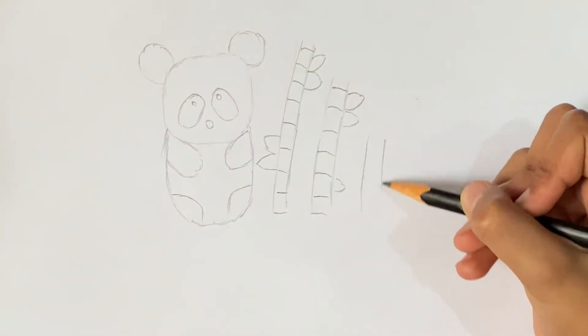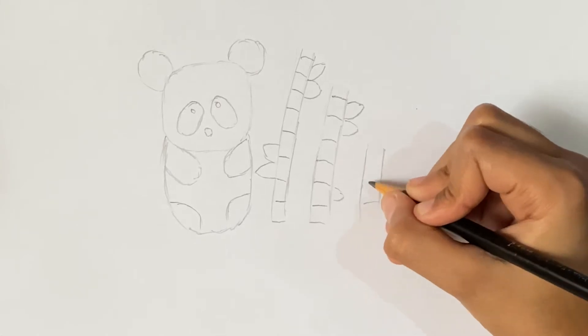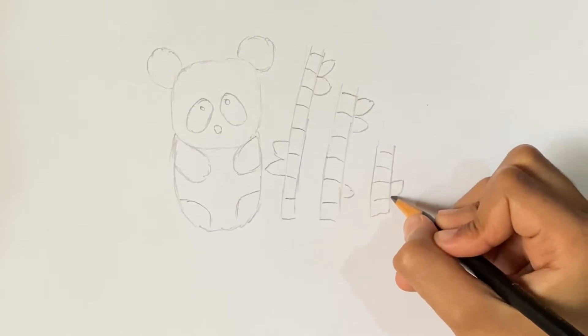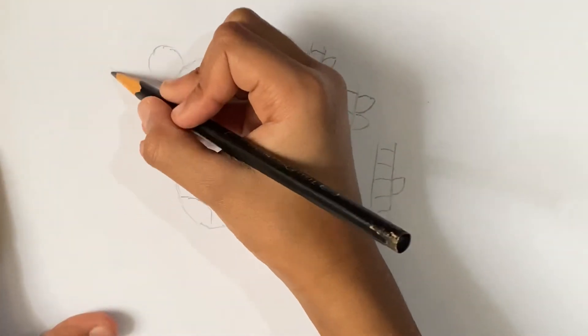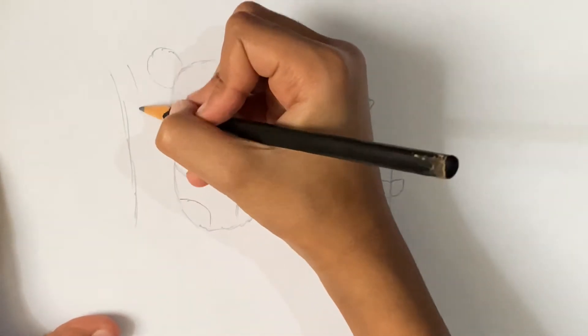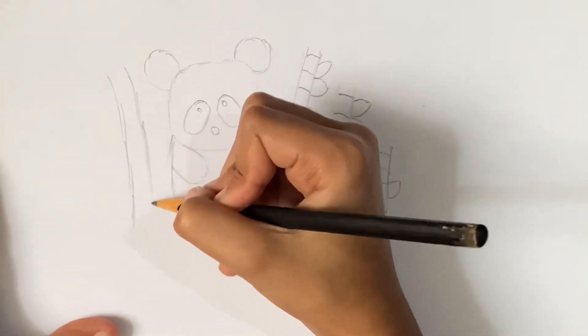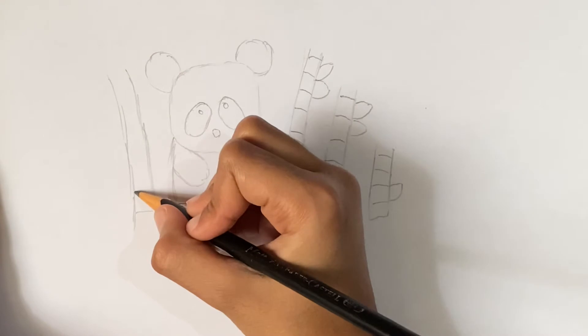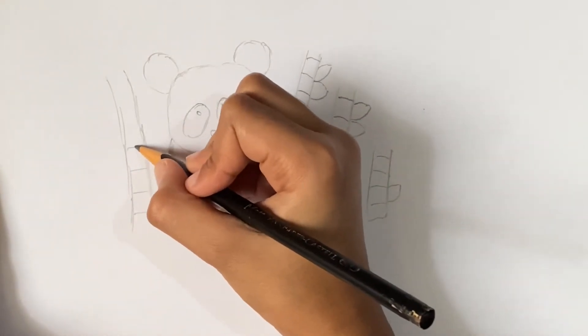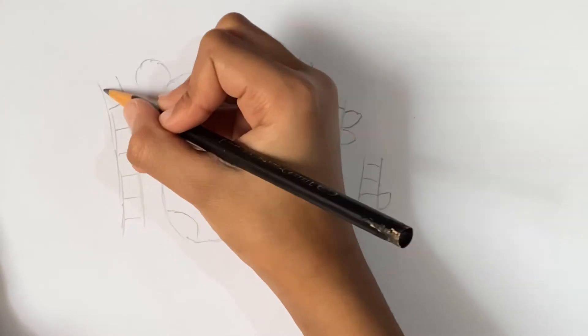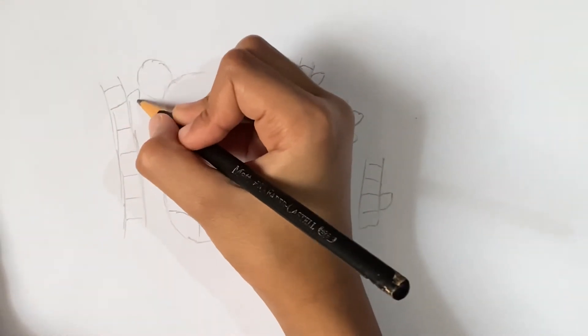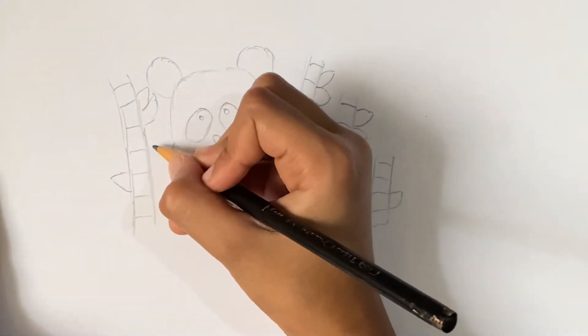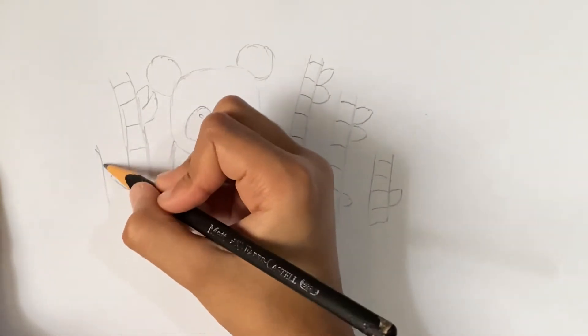Next let's draw an even smaller one. Let's draw the biggest bamboo. Let's draw some leaves here, one here and a small one.